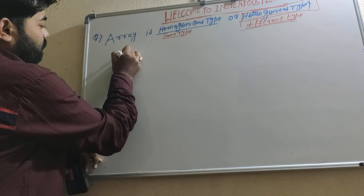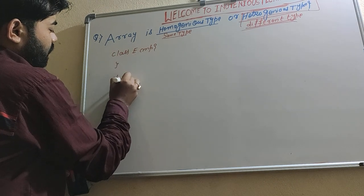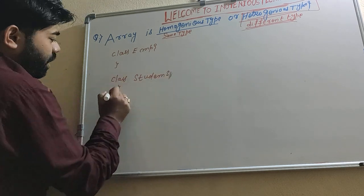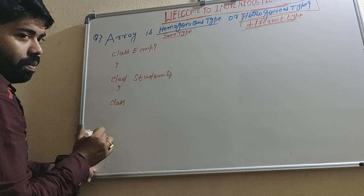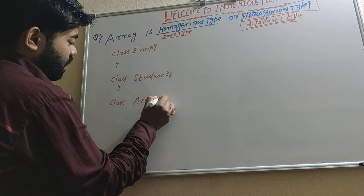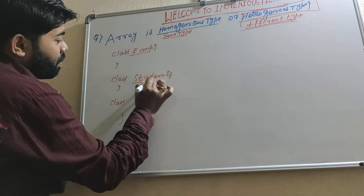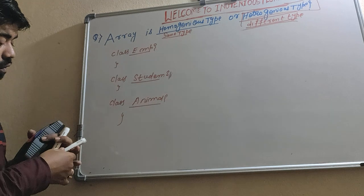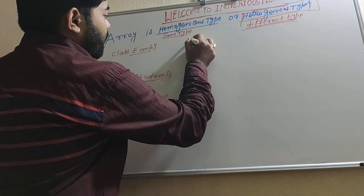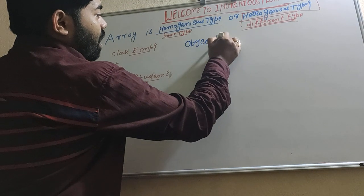For example, we have a class EMP, a class Student, and a class Animal. If you want to store different types of objects, then we will go for an Object class array. Object is a class available in the java.lang package, and inside this Object array you can store any type of data.